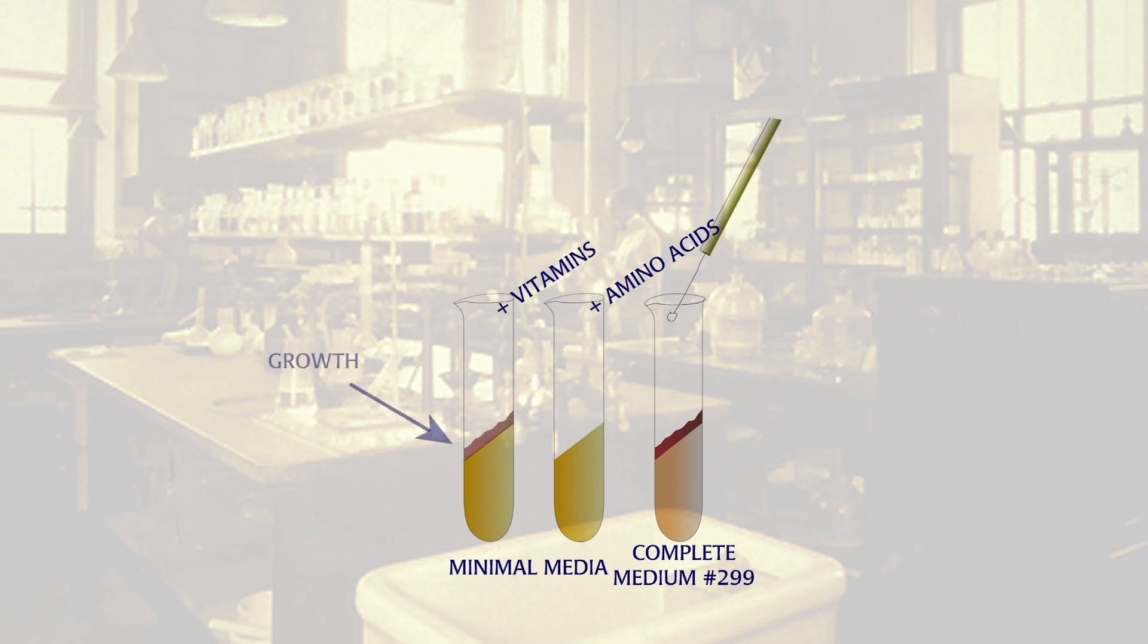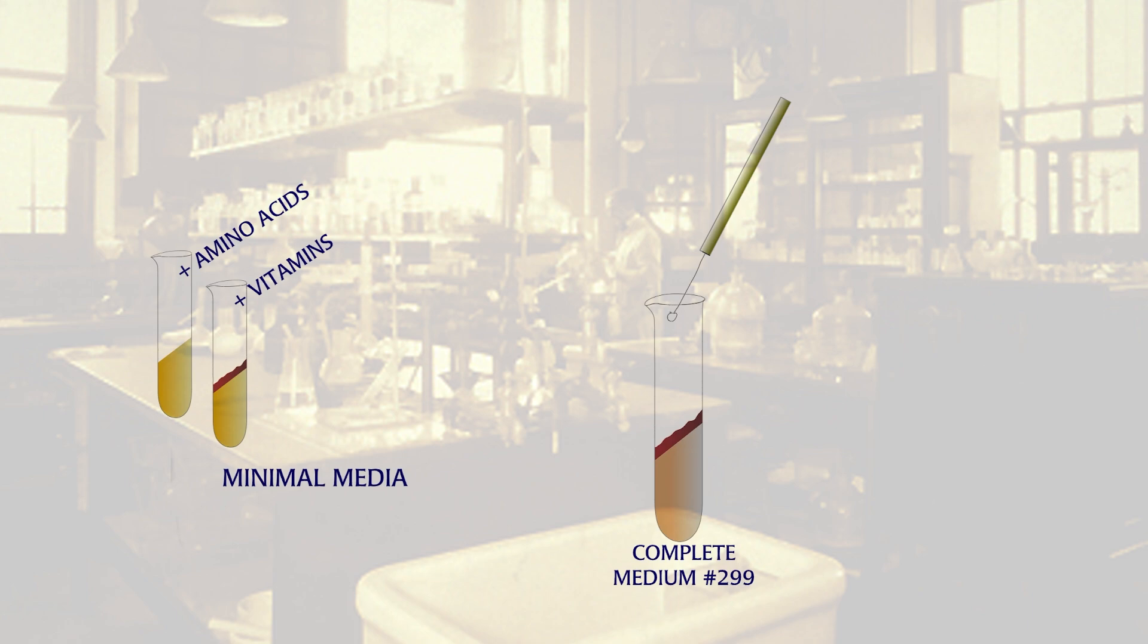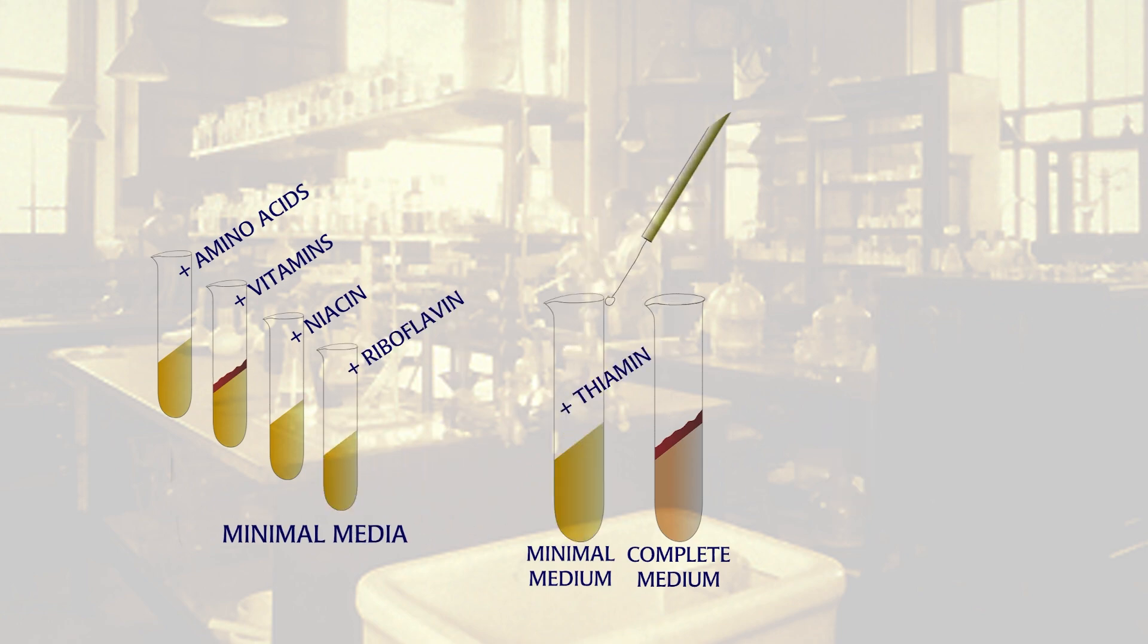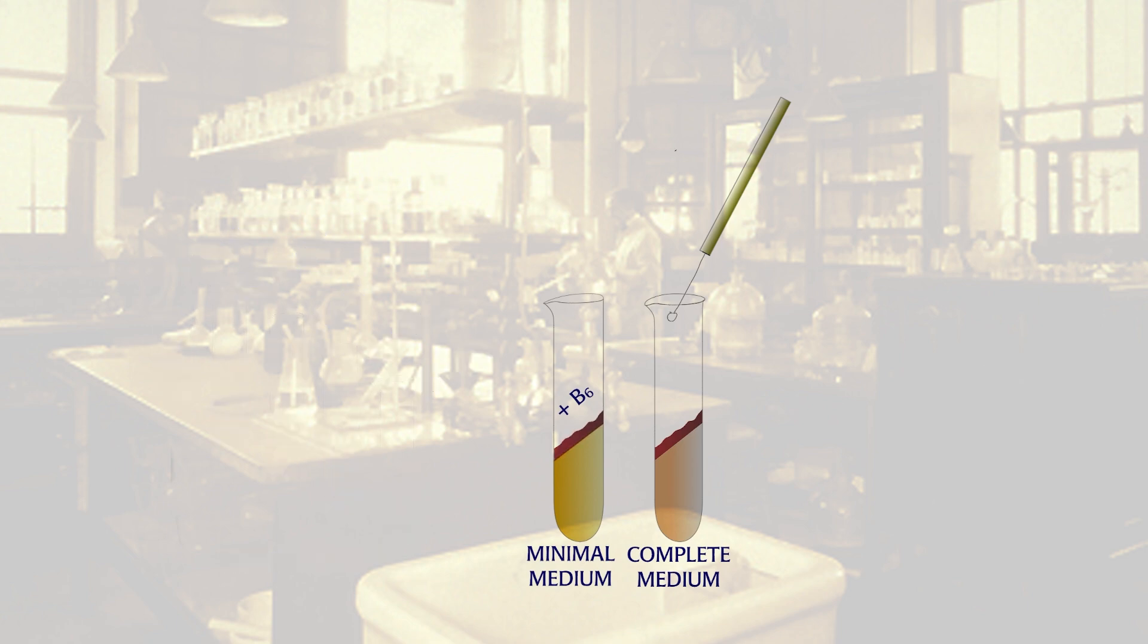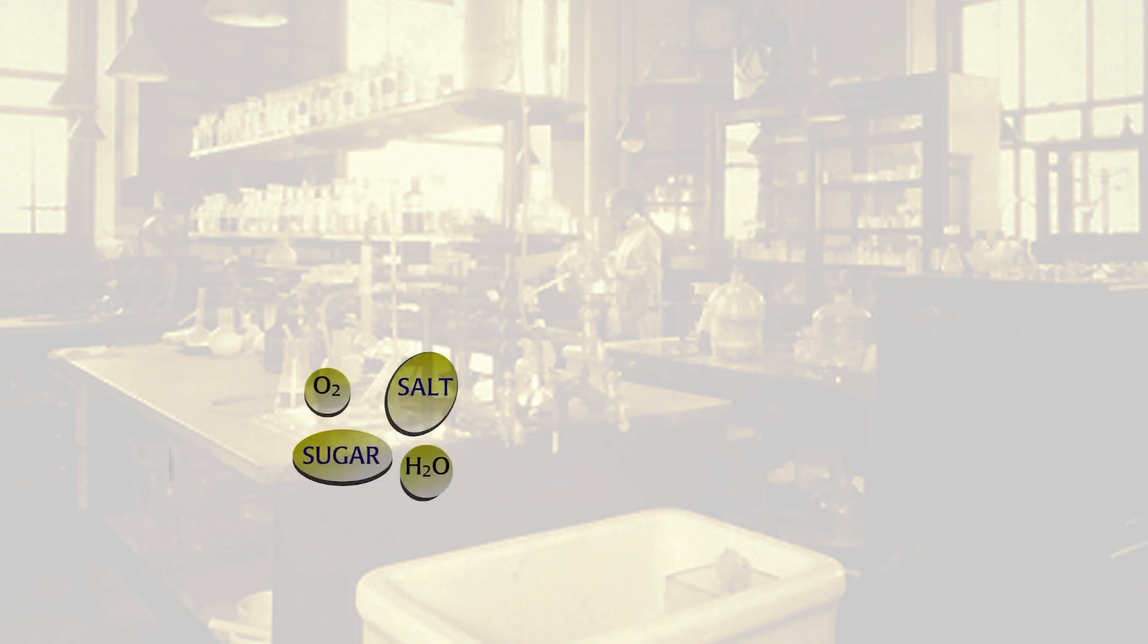They then had to figure out which vitamin was missing in culture 299. They did this by testing culture 299's ability to grow on minimal medium supplemented with single vitamins. They found that culture 299 grew only if they provided vitamin B6. It was their first Neurospora mutant. It could not make vitamin B6 on its own, because one of the enzymes in the B6 synthesis pathway must be affected.